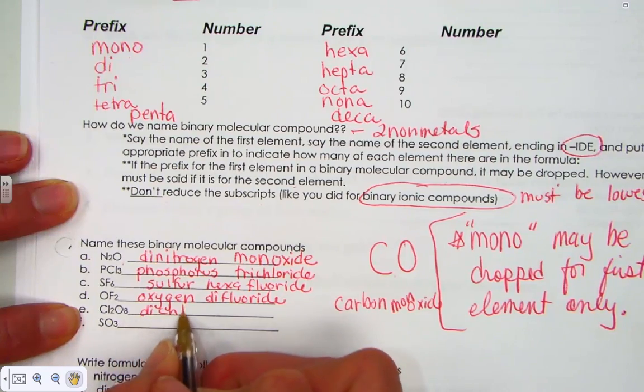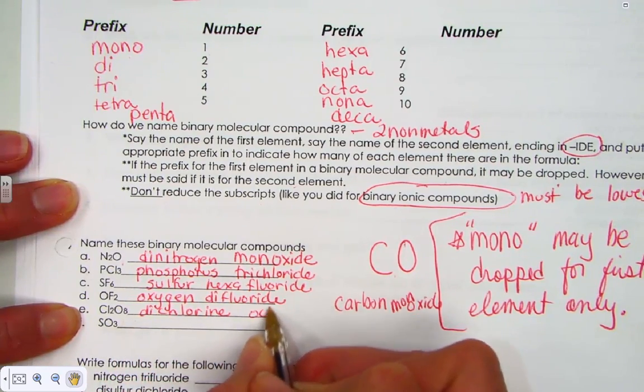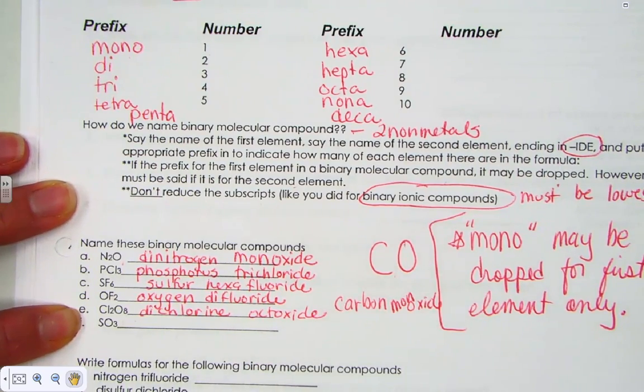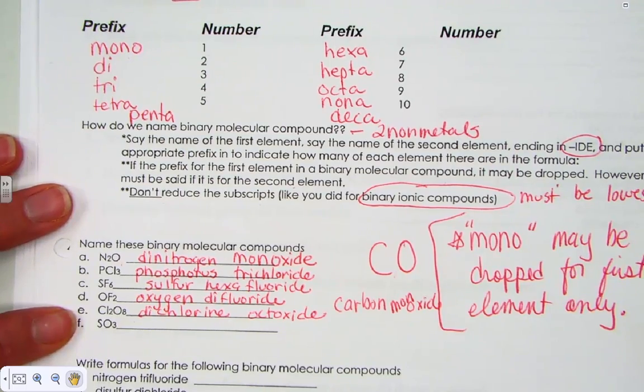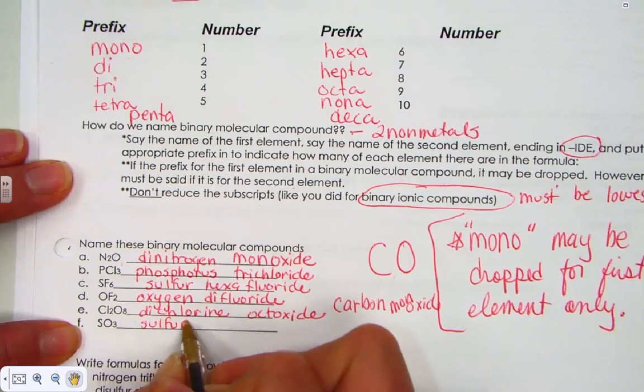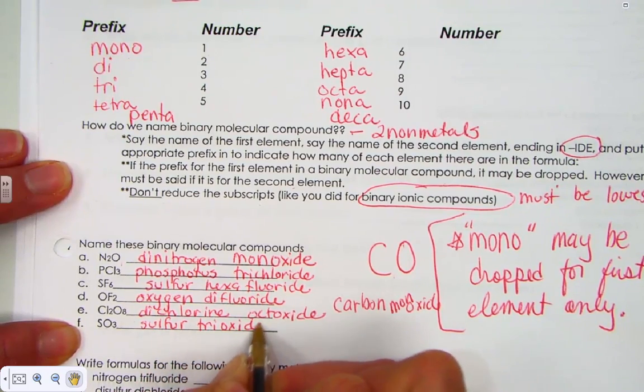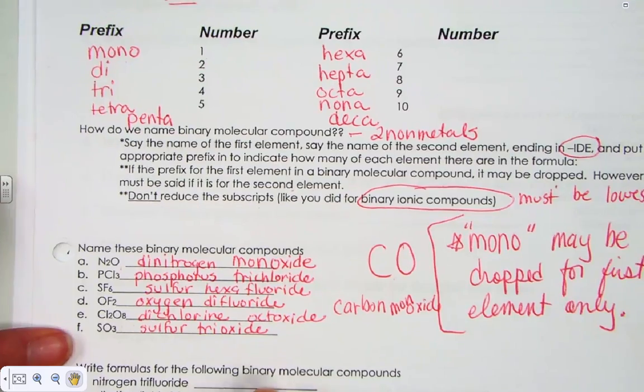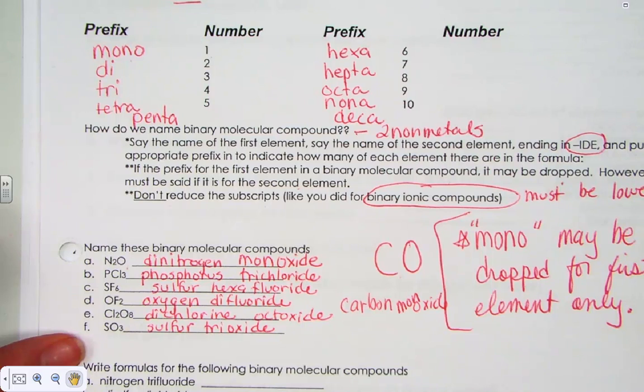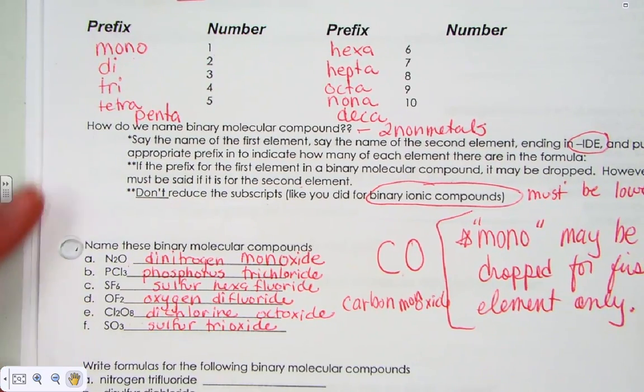Lopping off the double vowel sound. Dichlorine octoxide. And your letter F, sulfur trioxide. Notice it's only the last name that ends with ide. We say the name of the first element just as it is. The last name ends with ide. And we place the appropriate prefix onto the elements to tell us how many of each there are.